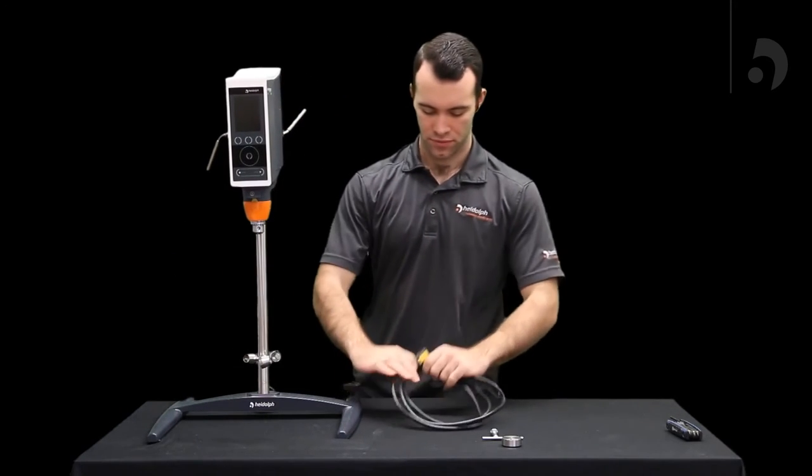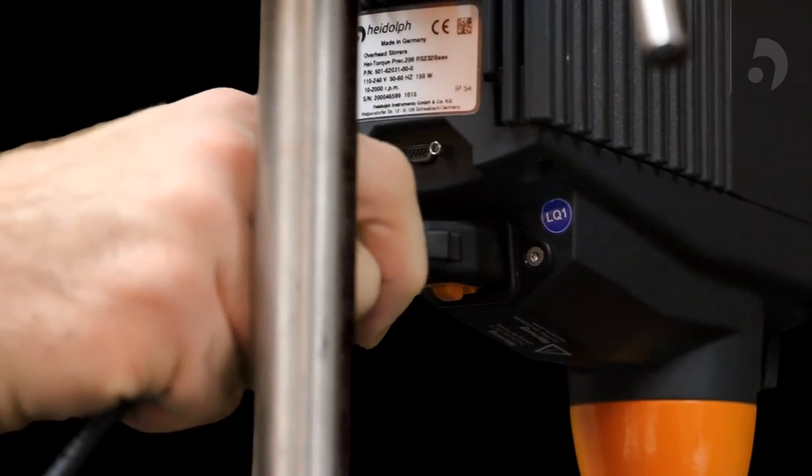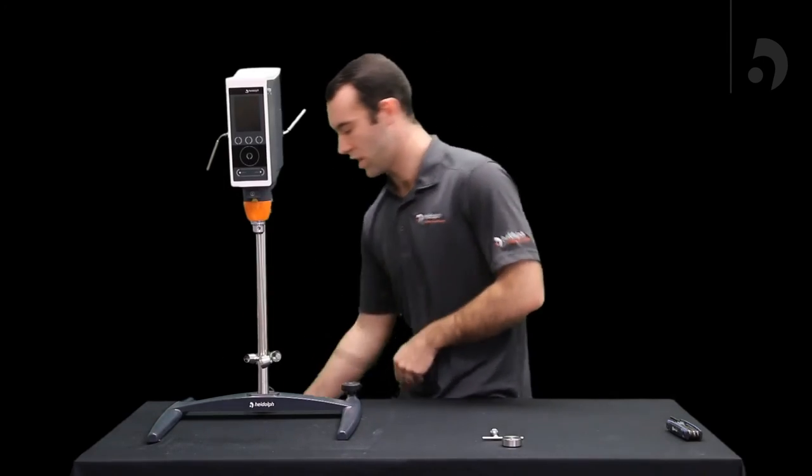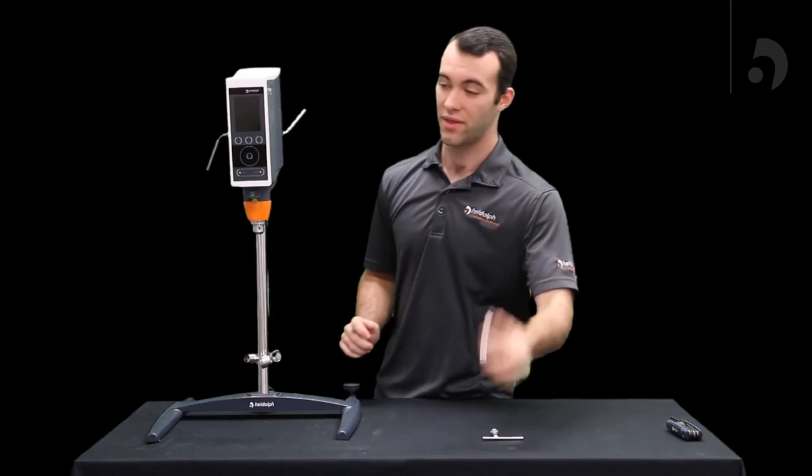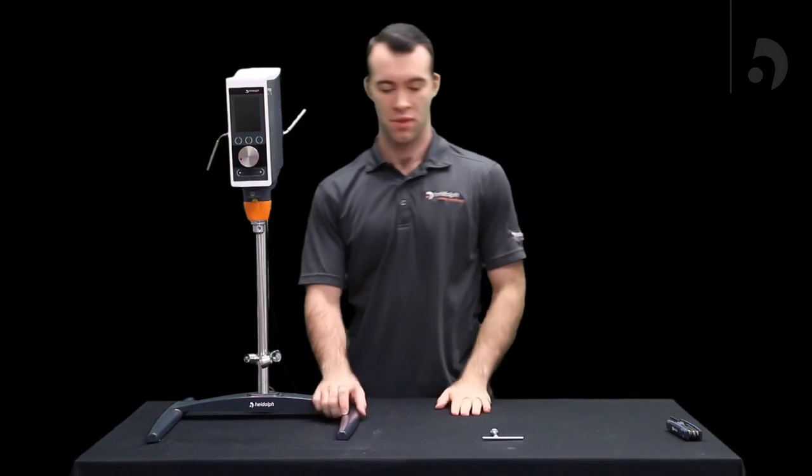Once you have that set up, you can take your power cord, insert it into the back, insert it into an outlet, and lastly add your magnetic smart knob. That was setting up your HITORQ, thank you very much.